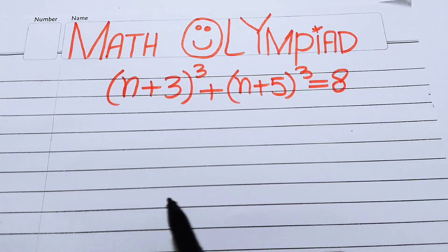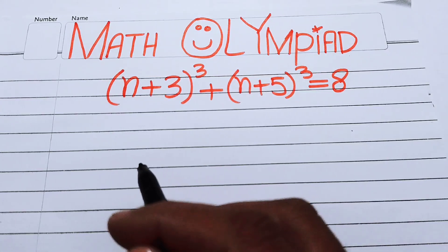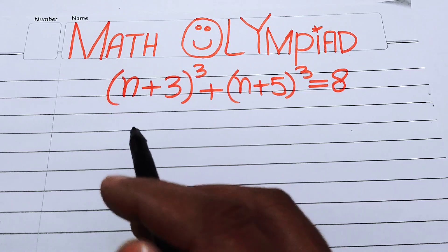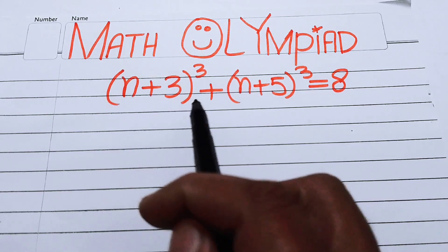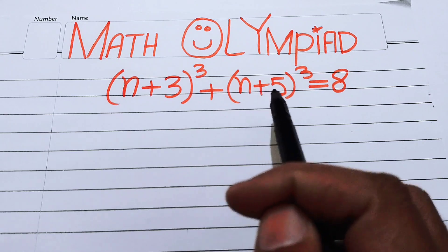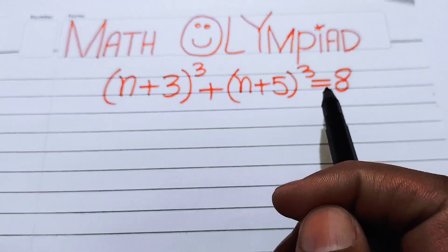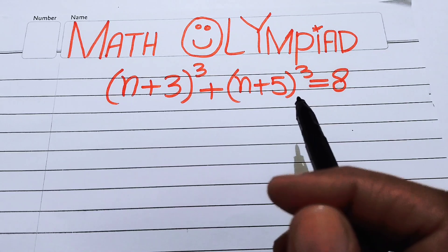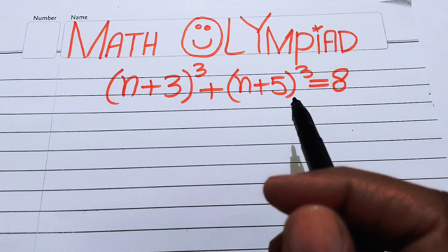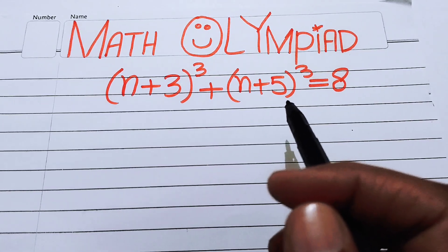Hello everyone, welcome back to the Map of Mathematics. In this video we are going to solve this nice algebra problem: (n+3)³ + (n+5)³ = 8, and we will solve for the real values of n.